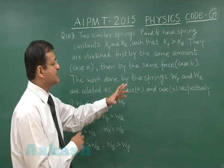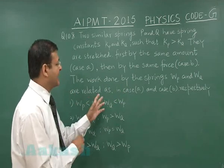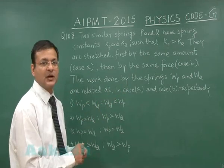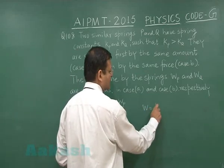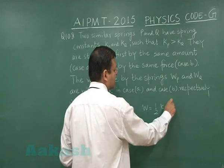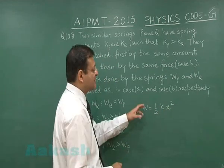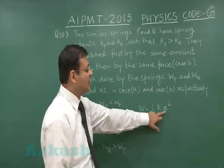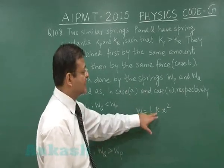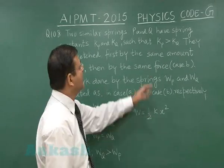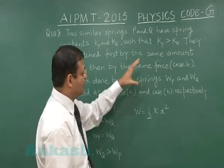The work done by the springs Wp and Wq are related in the two cases. For case A, I can write W as half Kx squared. This is the energy stored. Since they are stressed by the same amount, I have used x here. In the first case, you'll find that the work ratio is the same as the ratio of the spring constant. If Kp is greater than Kq, then Wp is greater than Wq.